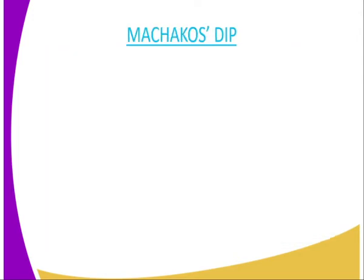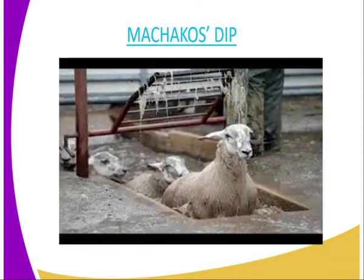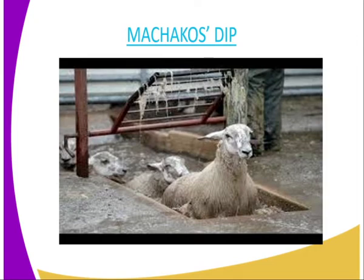We have the Machacos dip. In Machacos dip, these are dips which are normally used for dipping small animals like goats and sheep. You can see the sheep emerging from the Machacos dip.